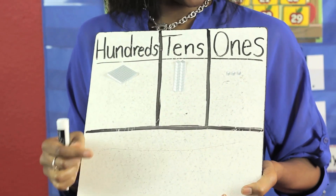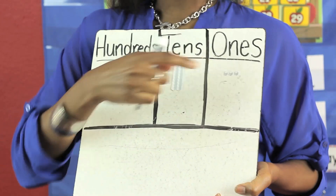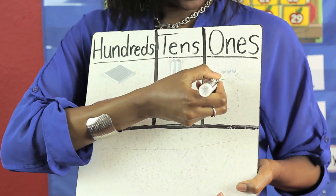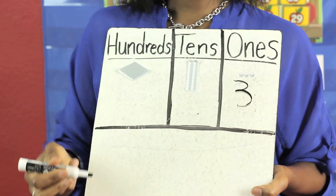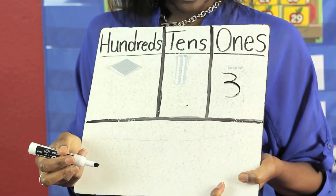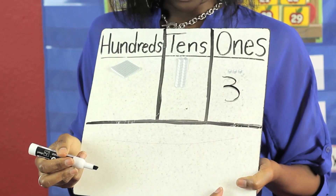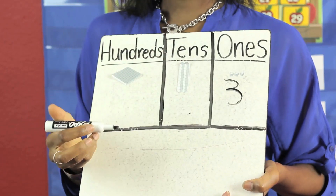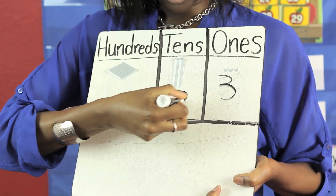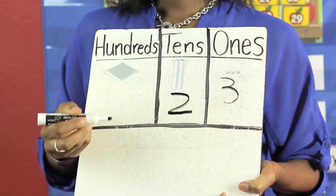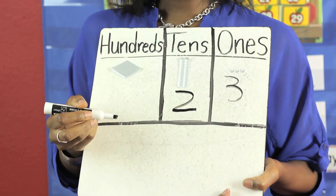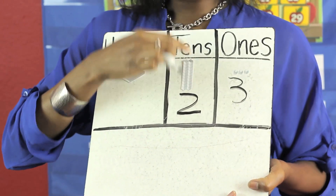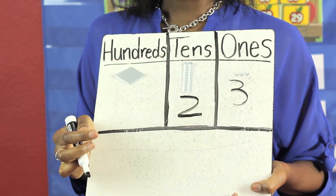First, you're going to ask the students how many ones do they see. They should tell you 3. Next, you're going to ask the students how many tens do they see. They should tell you 2. You also want to show them that there's 10, 20 tens.